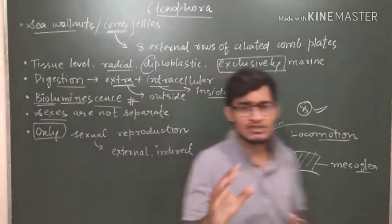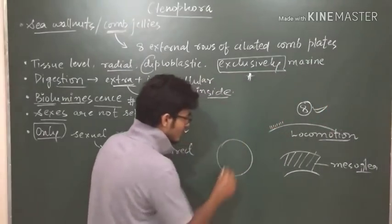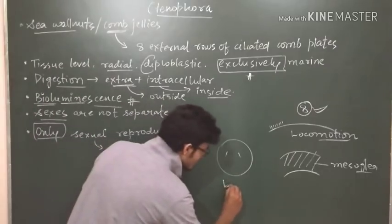Now, sexes are not separate. It means that there is no male, there is no female. In a single individual, there is male gamete and female gamete also. It means that they are usually bisexual.